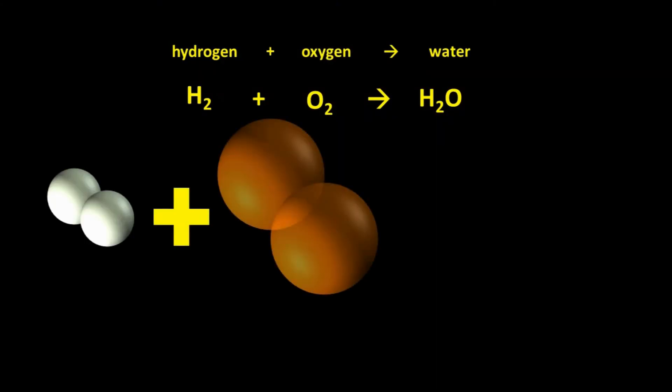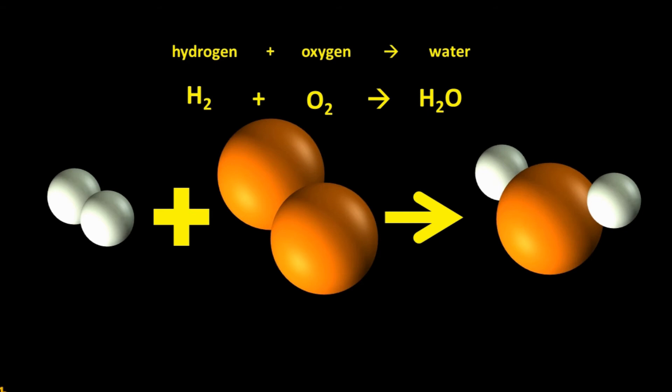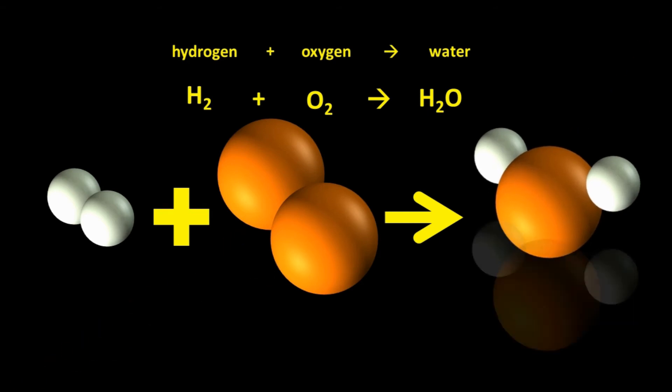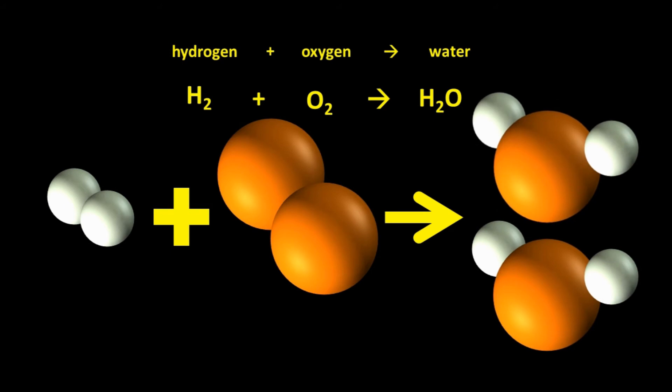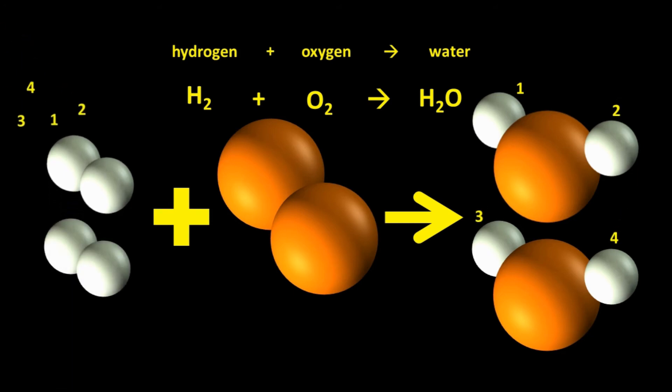This equation is also unbalanced. One of our original oxygen atoms seems to have disappeared. In fact, two H2O molecules form for every one pair of oxygen atoms. Now though we have four hydrogen atoms on the right hand side, so we need another pair of hydrogen atoms on the left hand side to react. The balanced chemical equation can therefore be written as 2H2 plus O2 produces 2H2O.